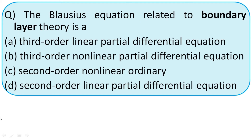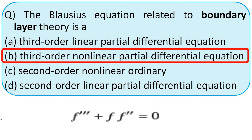The Blasius equation related to boundary layer theory is: (A) third-order linear partial differential equation, (B) third-order nonlinear partial differential equation, (C) 2nd-order nonlinear ordinary equation, (D) 2nd-order linear partial differential equation. Recalling the Blasius equation — it involves both third-order and second-order terms. It is a third-order nonlinear partial differential equation. The right option is option B.